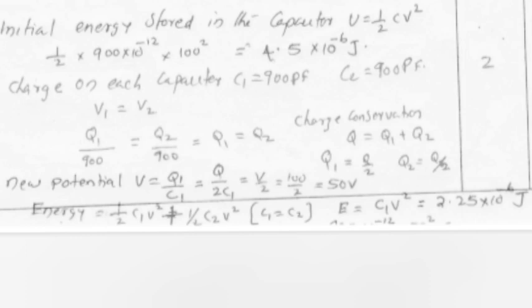New potential V equals Q₁ by C₁ equals Q by 2C₁ equals V by 2 equals 100 by 2 equals 50 Volt. Energy equals half C₁V² plus half C₂V². C₁ equals C₂. E equals C₁V² equals 2.25 times 10⁻⁶ Joules.